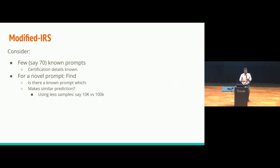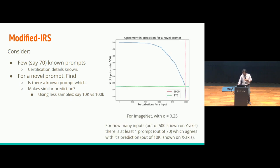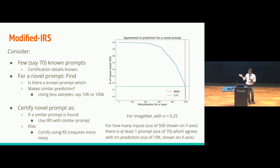However, we thought that, let's say that we have information known for say 70 prompts, that certification information, PA is known. Now, I get a novel prompt. Now, I'm asking the question, is there any prompt out of these 70 which makes similar prediction for a given input? And we found that if we take say 500 samples, then for approximately 33% of them, I can find at least one prompt from the existing prompt where the prediction is 99% similar. So we thought, great, at least for these 33% prompt, we can use our incremental randomized smoothing. Otherwise, we have to resort to randomized smoothing.